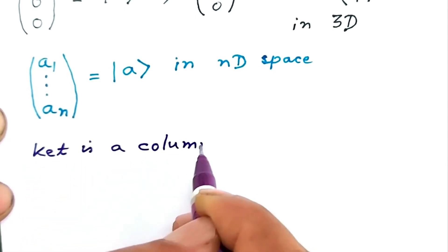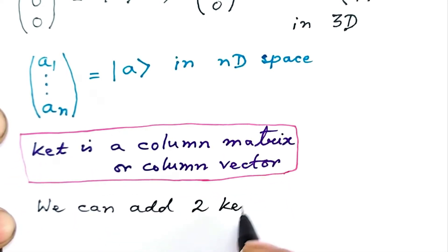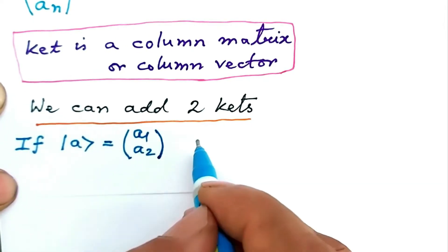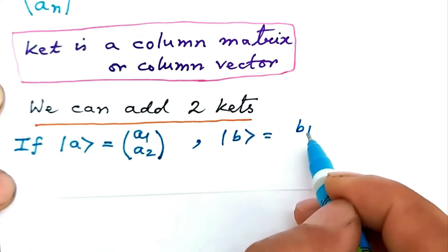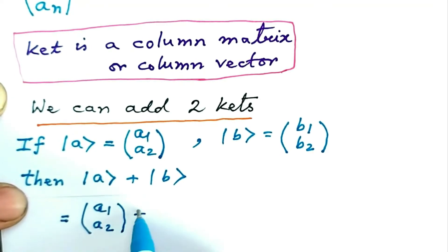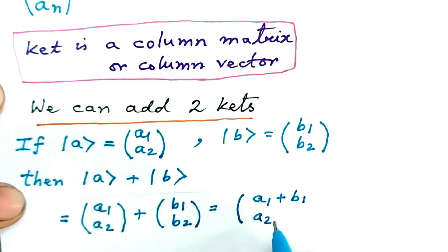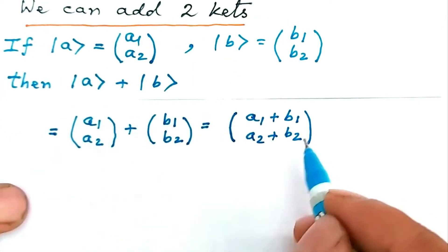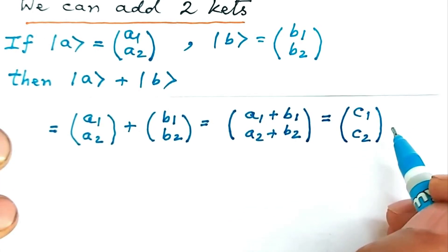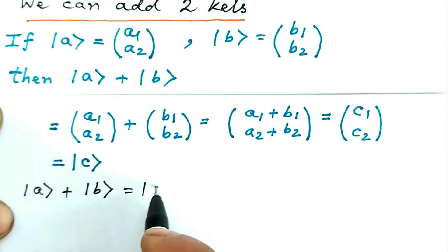It is by now very clear that a Ket is a column matrix or column vector. We note that we can add two Kets. Suppose Ket A is the 2×1 column matrix (A1, A2) and Ket B is the 2×1 column matrix (B1, B2). Then Ket A plus Ket B is the sum of the two column matrices, adding elements individually. Defining A1+B1 as C1 and A2+B2 as C2, this generates a new 2×1 column matrix (C1, C2) that we define as Ket C. So, Ket A plus Ket B equals Ket C.